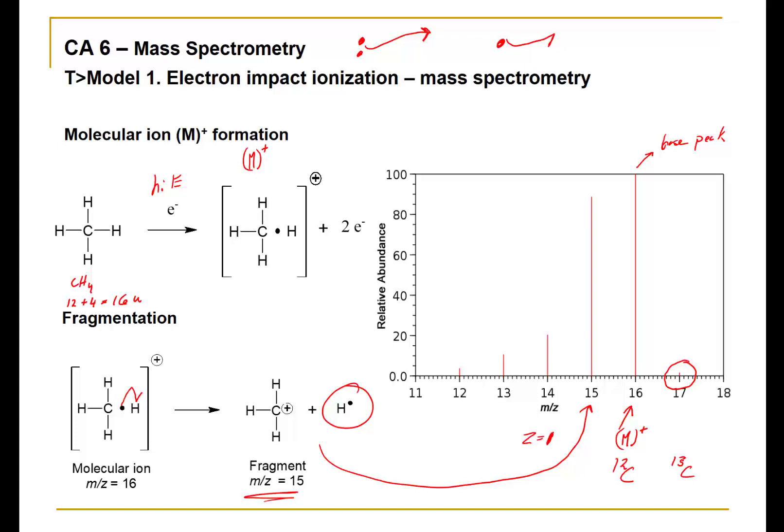In every sample, there should be a carbon-13 peak, because carbon-13 makes up 1.1 percent of all the carbon isotopes. This would be called the M plus 1 peak. In this example it looks very tiny and insignificant, but the M plus 1 peak can give us some important information.